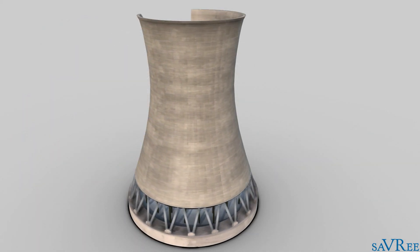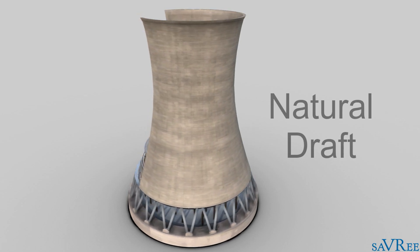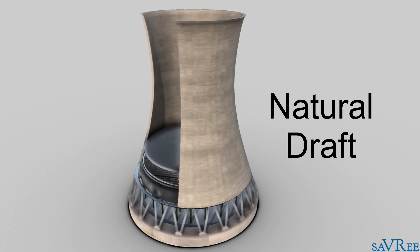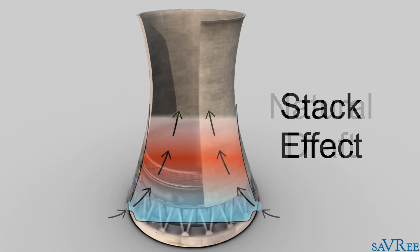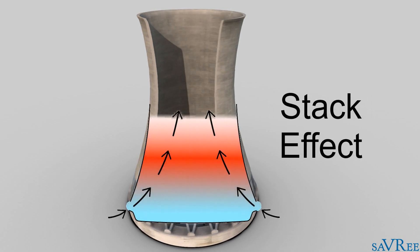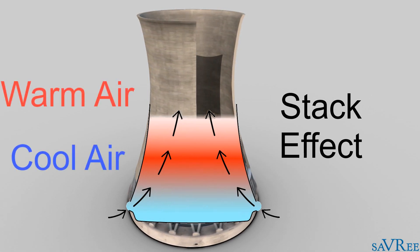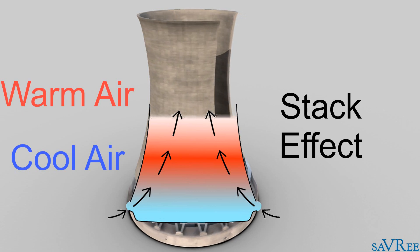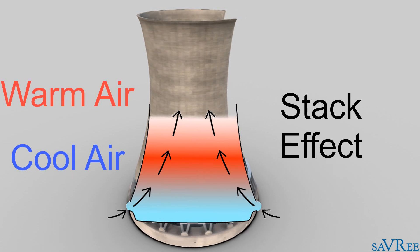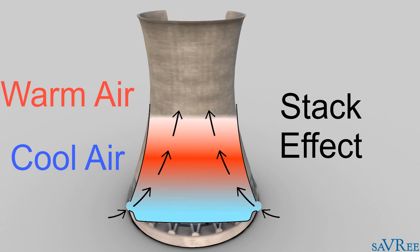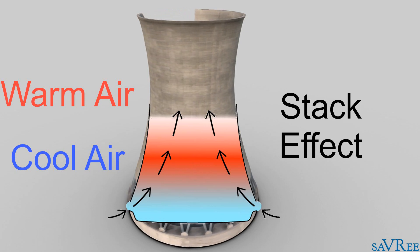A cooling tower that has no fans is a natural draft cooling tower. Natural draft cooling towers rely upon the stack effect in order to obtain movement of air through the tower. Air is heated by the cooling water, and this causes its density to decrease. The warm air then rises above the cool air due to this density difference. In the tower, this means that the warm air moves upwards through the tower, whilst cooler air is drawn in at the base. The cycle is continuous, and allows a large volume of air to be used to cool the cooling water.